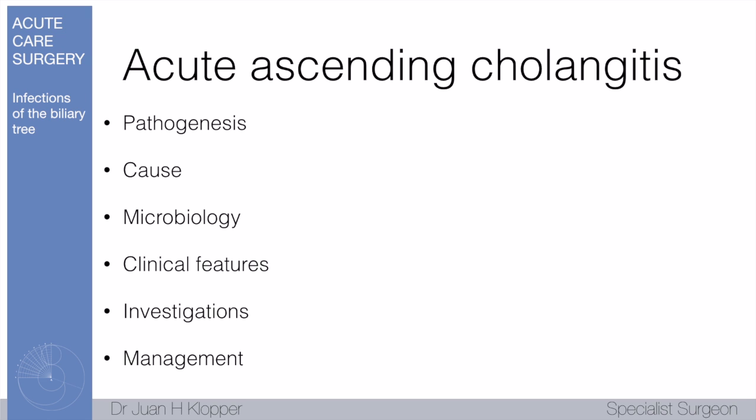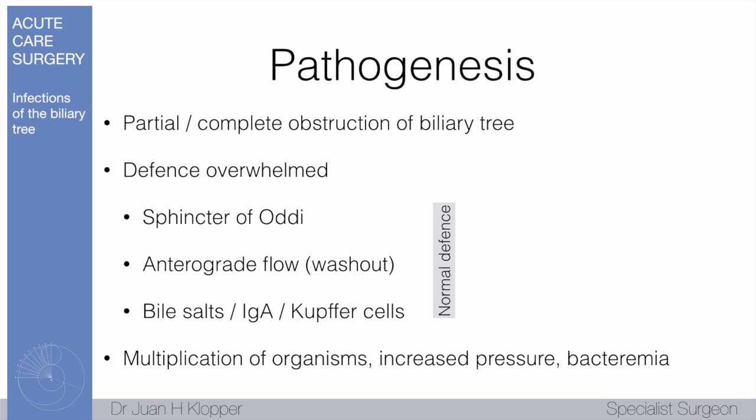Moving on to acute ascending cholangitis — pathogenesis, causes, microbiology, clinical features, investigations, and management. It's a partial or complete obstruction of the biliary tree which overwhelms the normal defense mechanisms. Normally, human beings don't develop cholangitis: an intact sphincter of Oddi keeps organisms out, antegrade flow of bile washes the system out, bile salts help prevent infection, immunoglobulin A is produced by the cell walls, and in the liver the Kupffer cells take part in normal defense of the biliary tree.